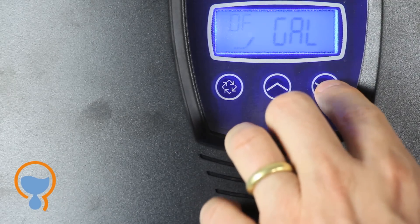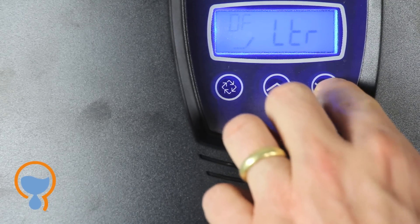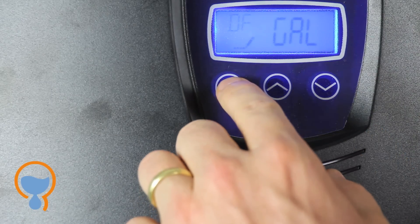So the first thing we need to choose is the type of units we're using. We can choose gallons or liters. In our case we're going to choose gallons and press enter.